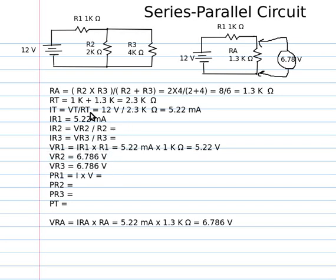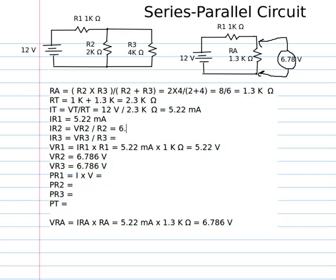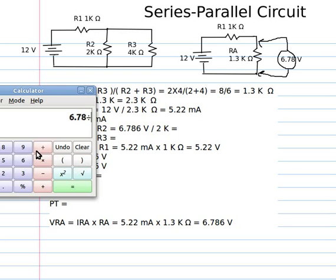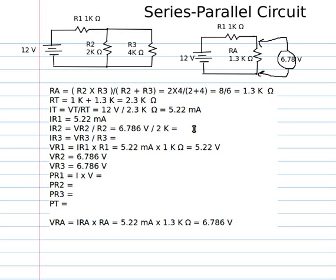We know that the currents through R2 would be the voltage across R2 divided by the resistance of R2. So that would be, we take that same value, 6.786 volts divided by the resistance of R2, which is 2k ohms. And that would give us 3.39 milliamps.